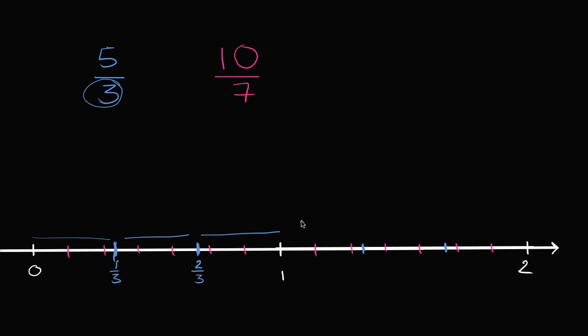And then the space from 1 to 2 is split into 3 equal sections: 1, 2, and 3. You see that right over here. So I'm marking off all of the thirds.